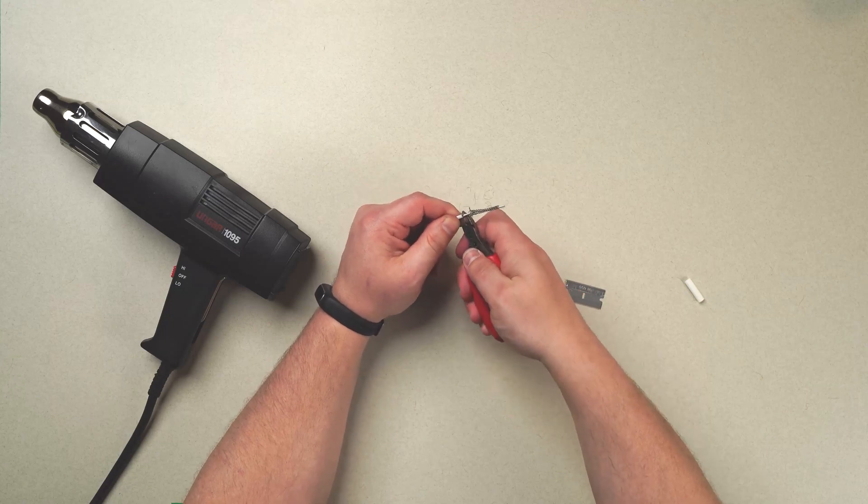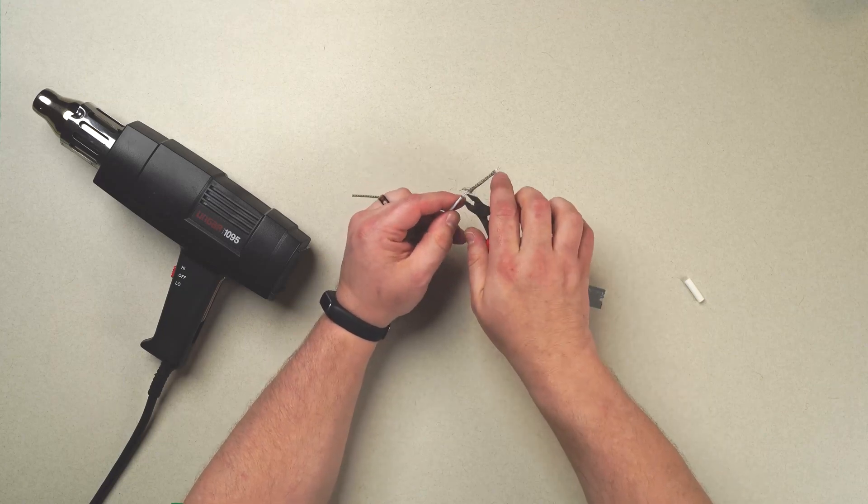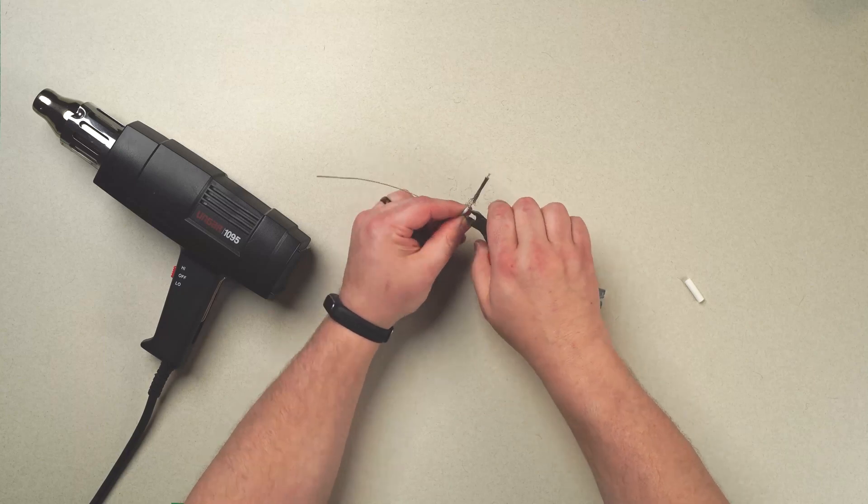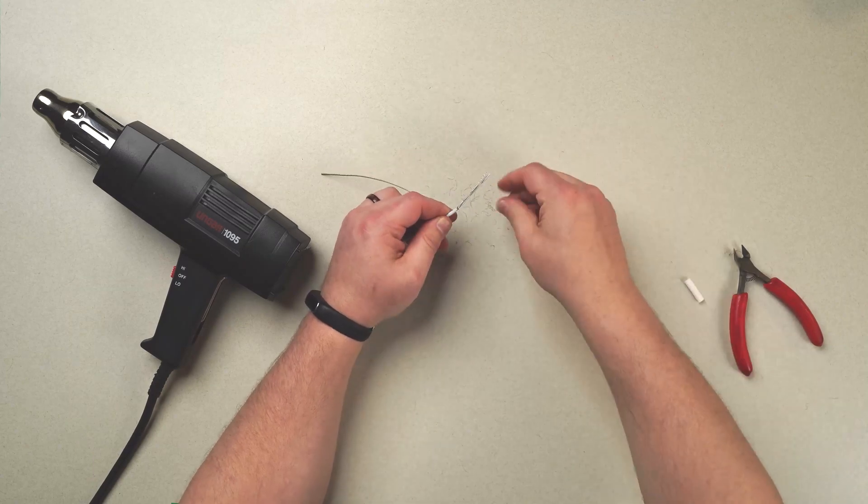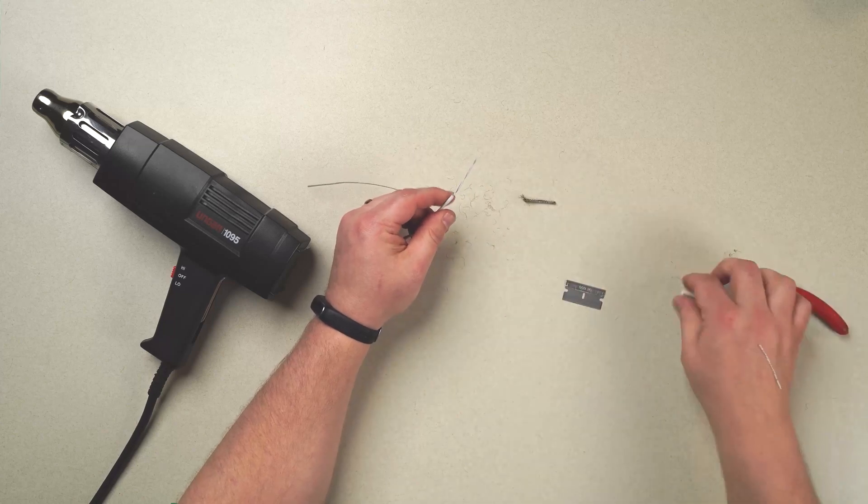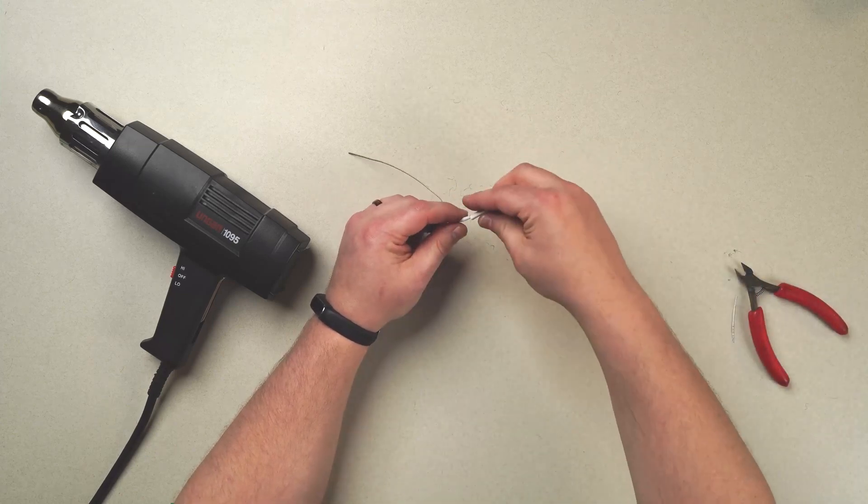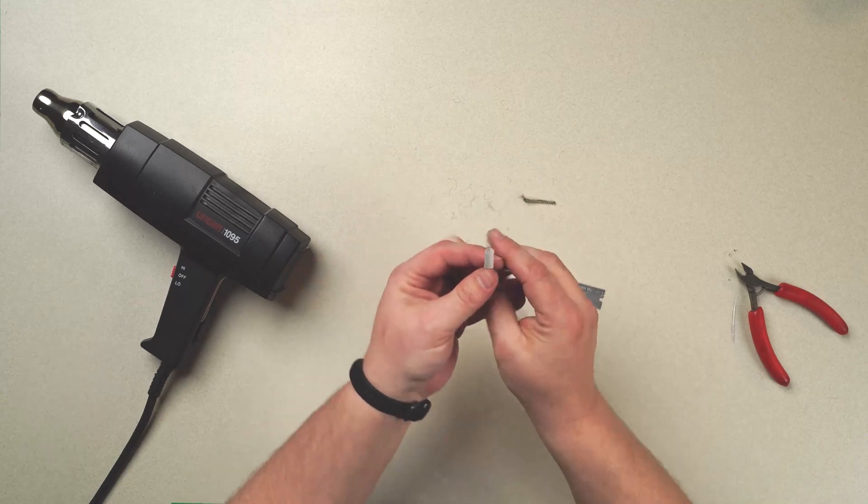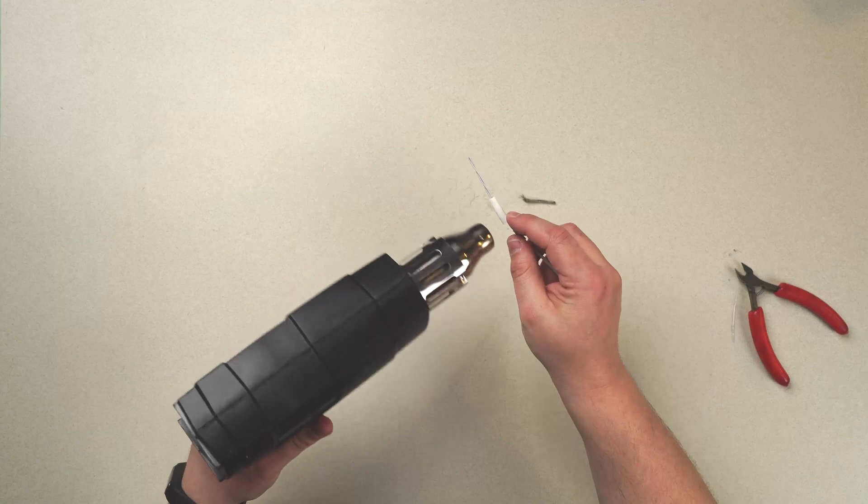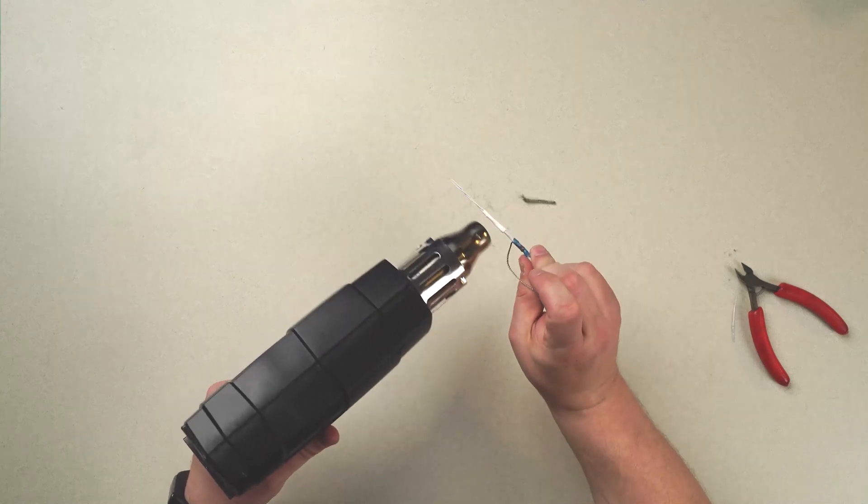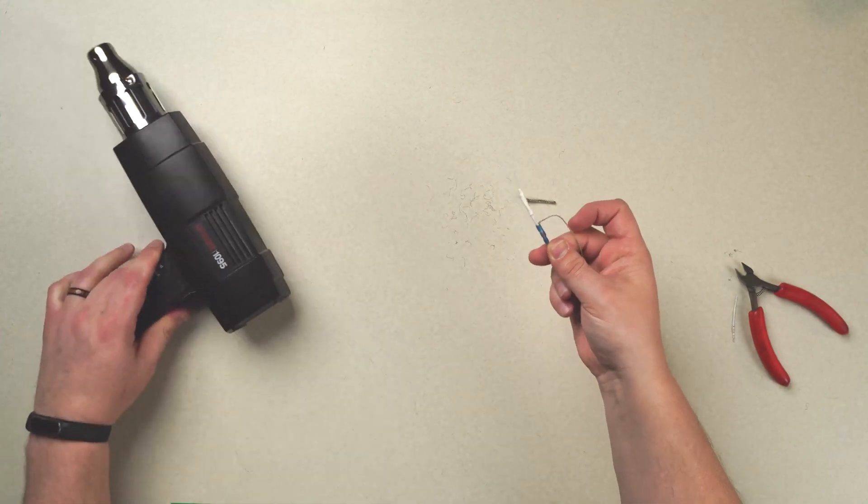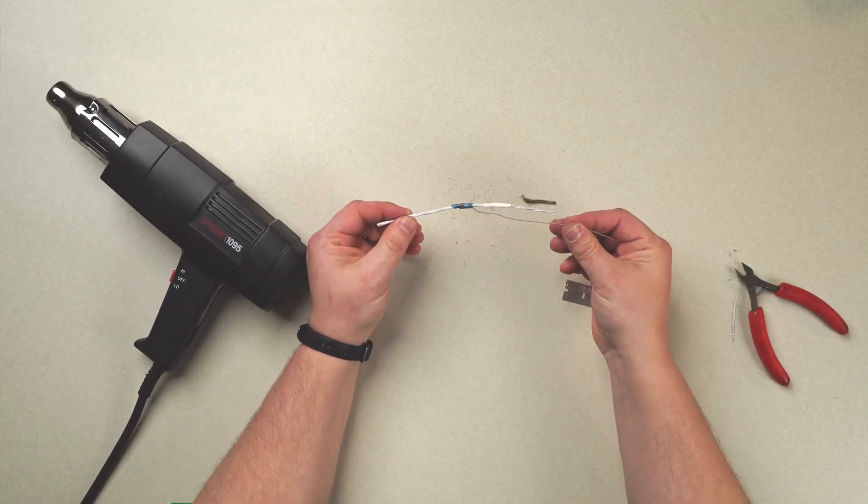Being careful not to cut any of the core conductors in the wire itself. Remove our strain relief paper, and then we can apply our shrink tubing. For the completed termination.